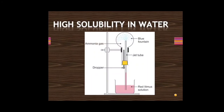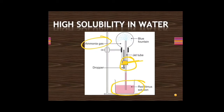Ammonia is highly soluble in water, just like HCl gas. The fountain experiment is used to show this high solubility. A dropper is connected to a round bottom flask containing ammonia gas, with a capillary tube arrangement. A beaker of red litmus solution is placed below, and one drop of water is added to the flask using the dropper.